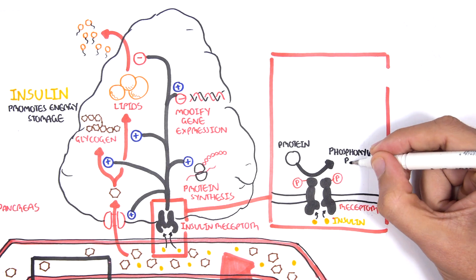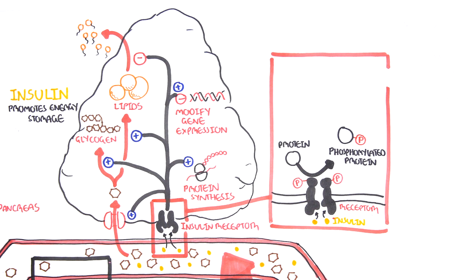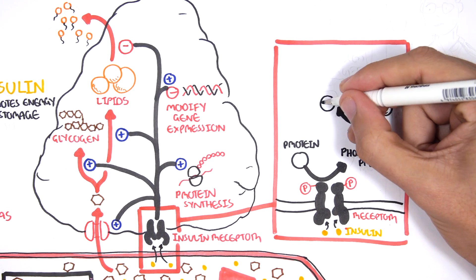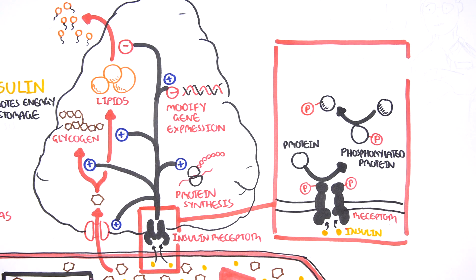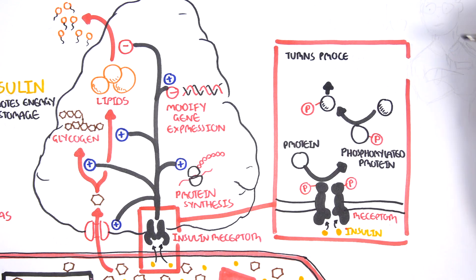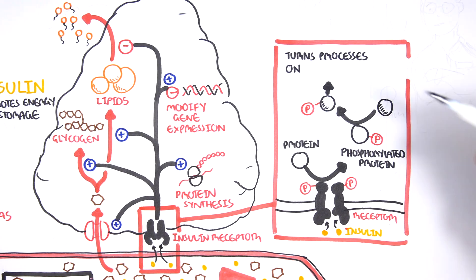Protein phosphorylation is a normal chemical reaction that changes the behavior of proteins inside the cell. Thus, by using protein phosphorylation, the cell can select which processes to turn on or off and when.